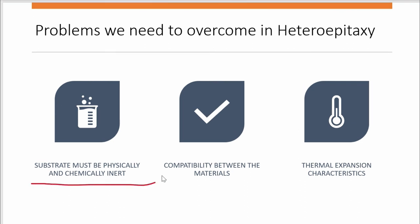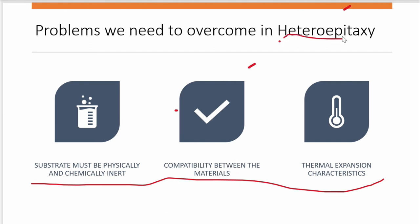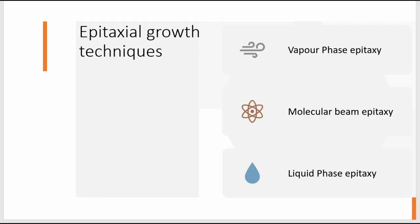All these problems associated with hetero-epitaxy we do not see in homo-epitaxy, because the crystal structure remains the same in homo-epitaxy — so we don't have to worry about material compatibility or thermal expansion characteristics. Next is epitaxial growth techniques. We have three techniques: vapor phase epitaxy, molecular beam epitaxy, and liquid phase epitaxy. We can grow the epilayer with these methods, which we will discuss in the next video. Thank you.